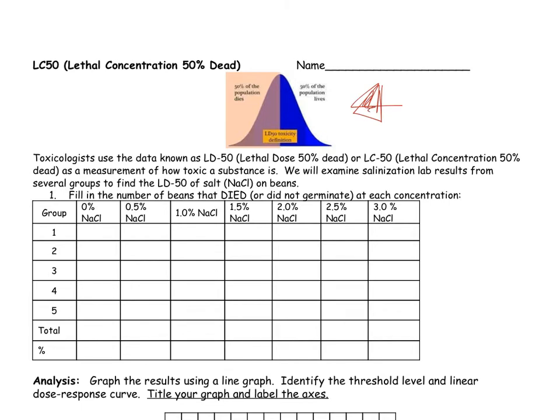It says toxicologists use the data known as LD50 or LC50 as a measurement of how toxic a substance is. We will examine salinization lab results from several groups to find the LD50 of salt NaCl on beans or peas. We're going to fill in the number of beans that died. It's actually opposite data. On your salinization lab, we wrote down the number that germinated, so now we're going to subtract that number from our total number and get how many died. If 9 germinated out of 10, it meant that 1 out of 10 died.